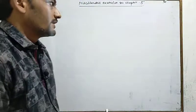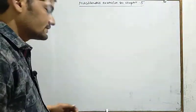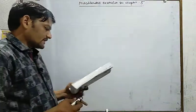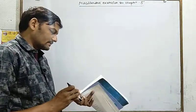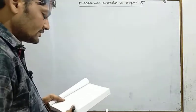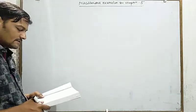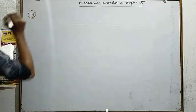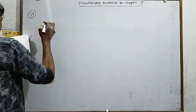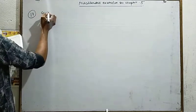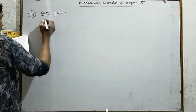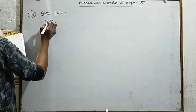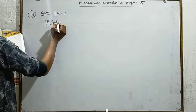Hello students, today we discuss the remaining part of the miscellaneous exercise on Chapter 5. Question number 17: if alpha and beta are different complex numbers with mod beta equal to 1, then find the value of mod of (beta minus alpha) divided by (1 minus alpha-bar times beta). यहाँ पर given है कि mod beta की value 1 है और आपको यह expression find करनी है।